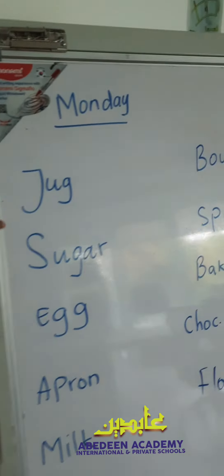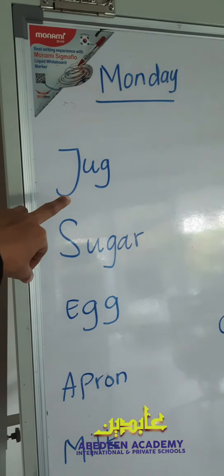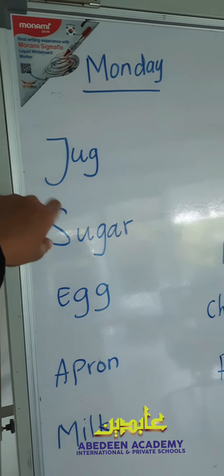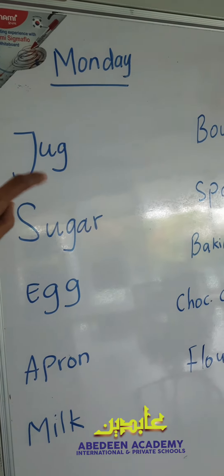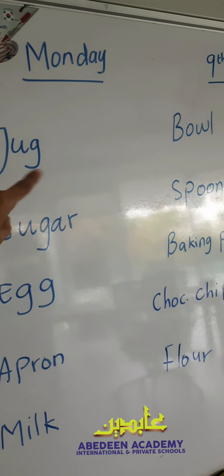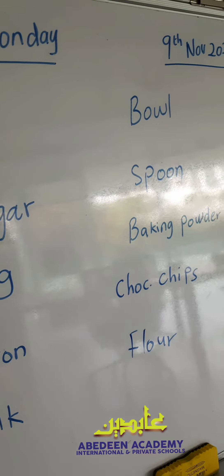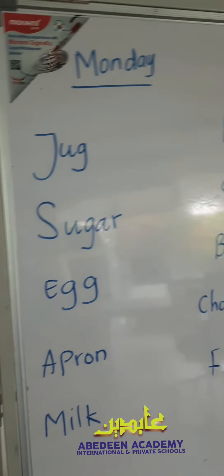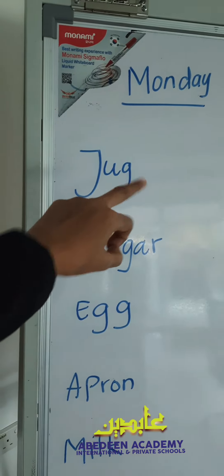So the first word we have here is jug. How do we read it? Jug — j-e-g — jug. The first one is jug.